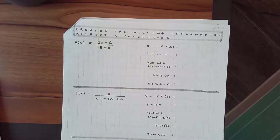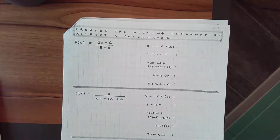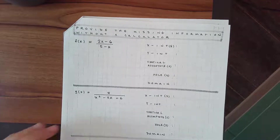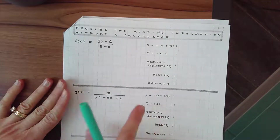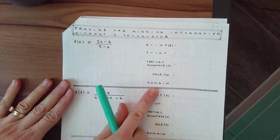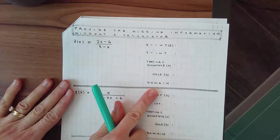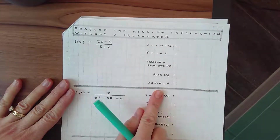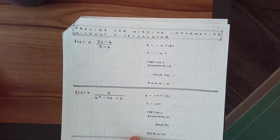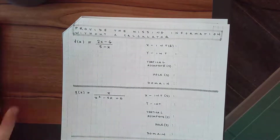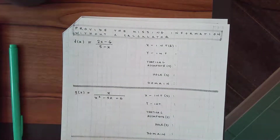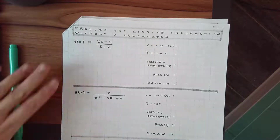Hey Calculus students, this is Mrs. Fellon again. We are on the second part of Lesson 1 for Unit 4. What I'm looking at here is what I'm going to have you do on your own eventually. I wanted to go through how to find all of these pieces, give you a shortcut way, and then work through a couple examples of how to do that. So first, let's talk about how to find some of these things.